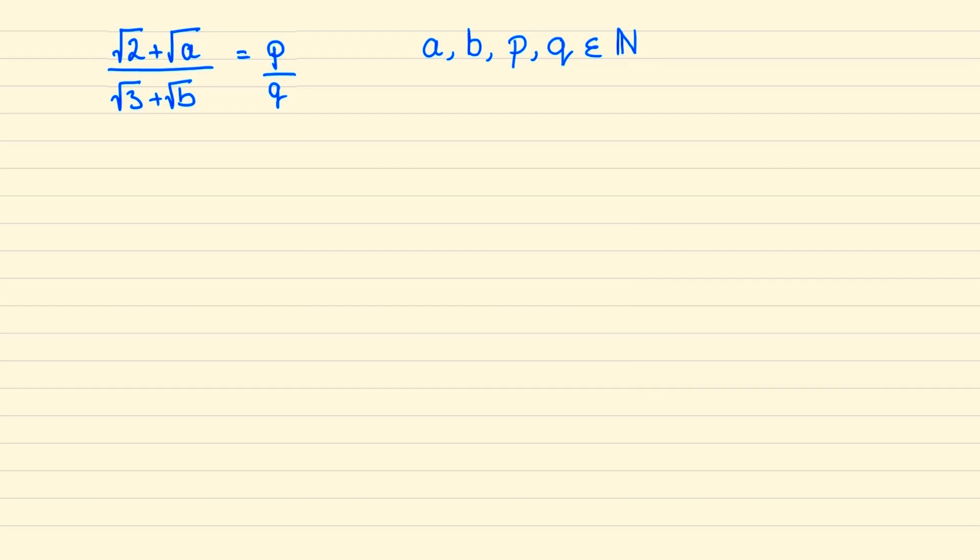And so if we cross multiply then we end up with the following and then moving p root b to the left side and q root 2 to the right side we are left with the following.